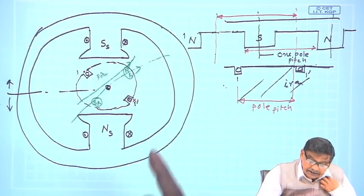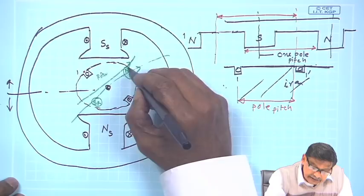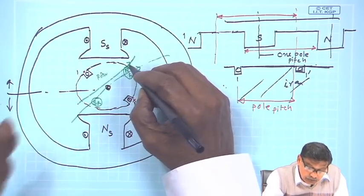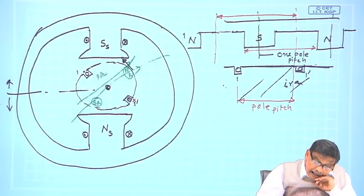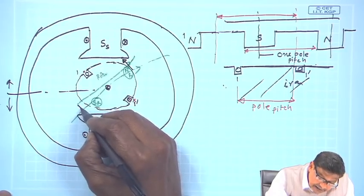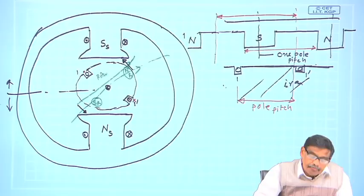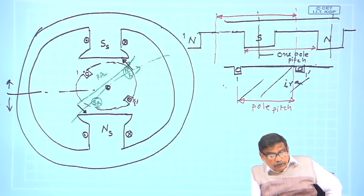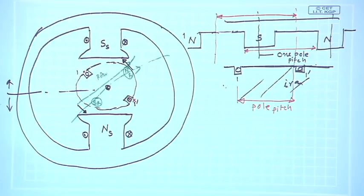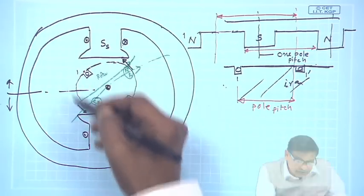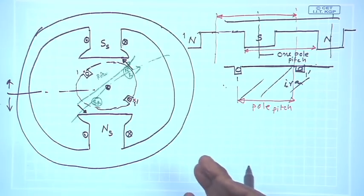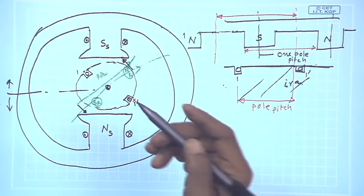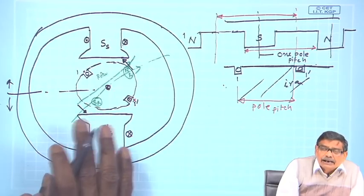These two sets of magnets interact and give you force. In this particular case, NR and SS attract, so NR — which is free to rotate — will experience a force in this direction, and similarly SR experiences a force in the opposite direction. Therefore, there will be a torque applied to the whole rotor body and the rotor will try to spin in the anticlockwise direction in this particular case. This is the way to look at things.